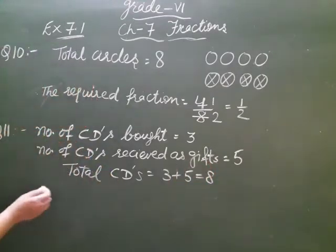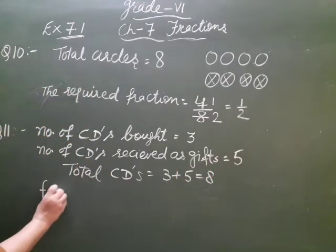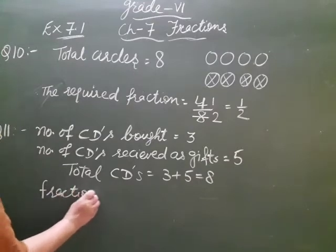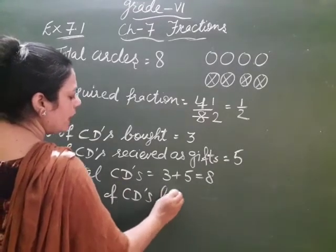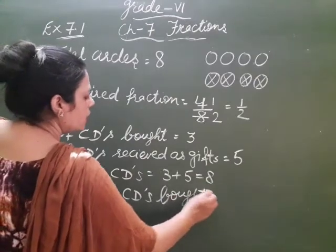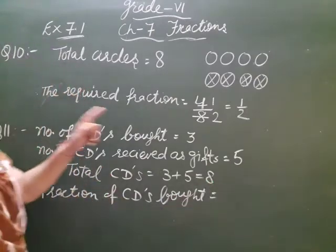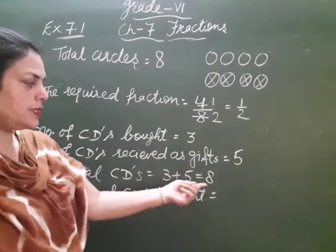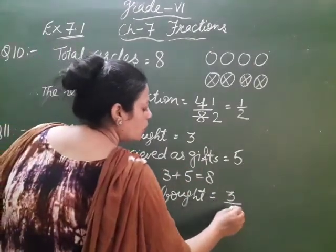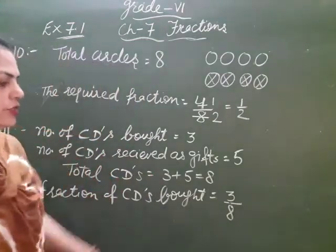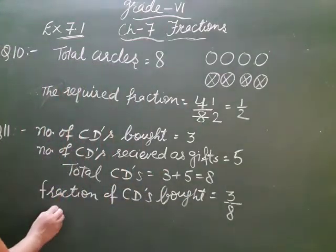So firstly, fraction of CDs bought. How many CDs were bought? That is 3, and total CDs are 8. So 3 CDs are bought out of 8. Its fraction is 3 by 8.